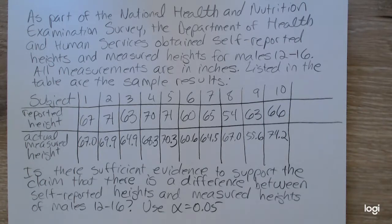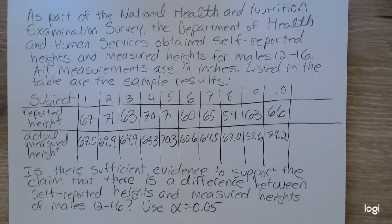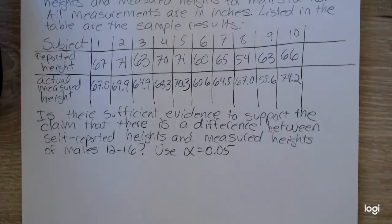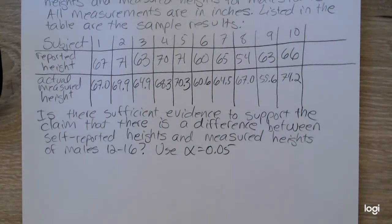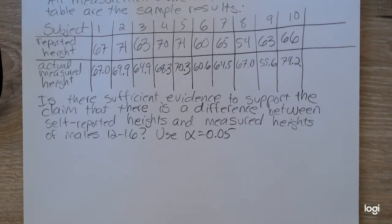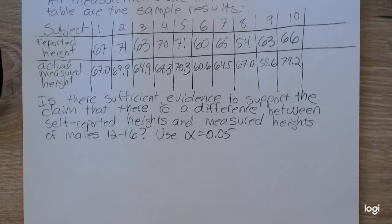We need to write the claim as a mathematical statement in terms of mu sub d, the difference. The paired t-test reduces to a single sample t-test through subtraction. What we need to do is create a third column of data of differences. I will be doing that in my TI-84.